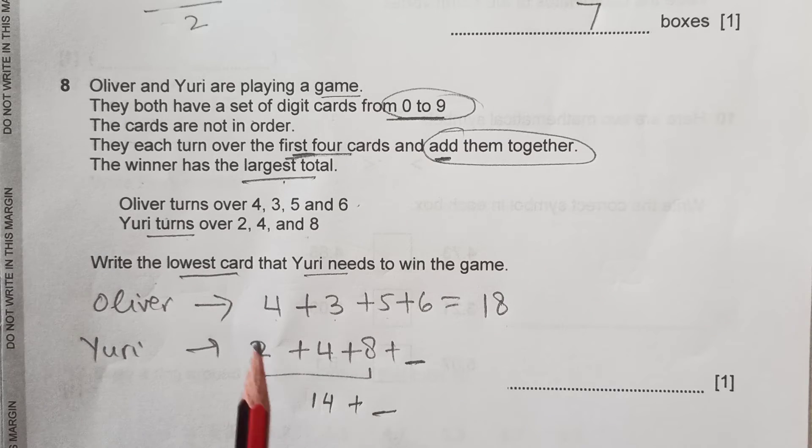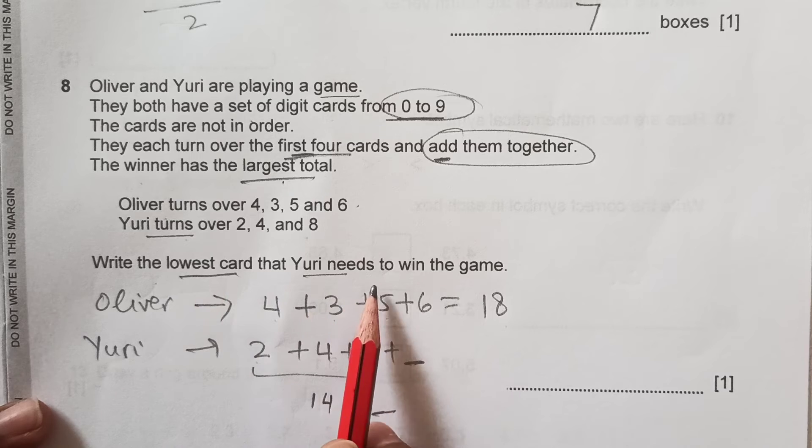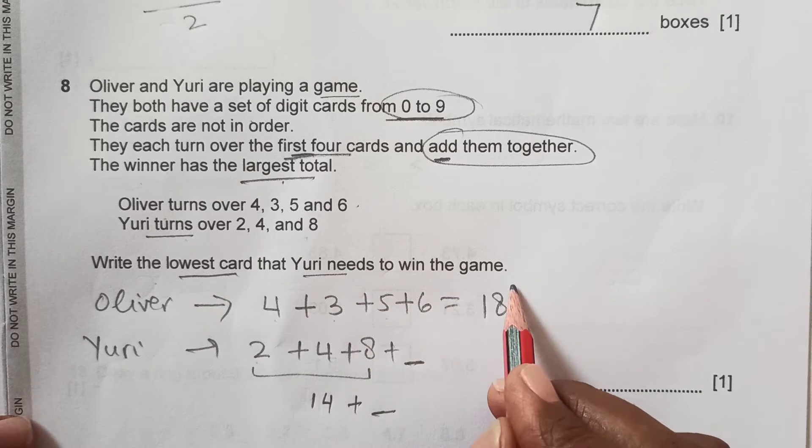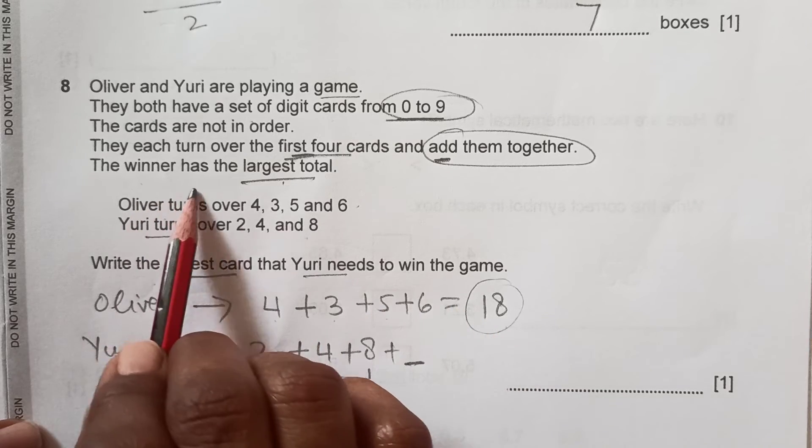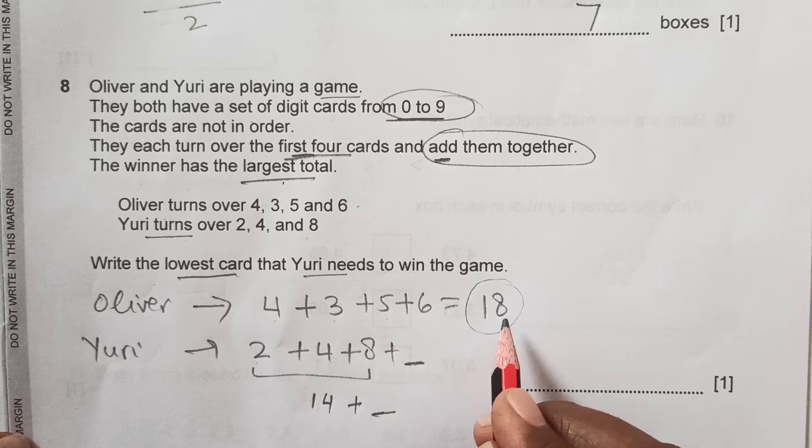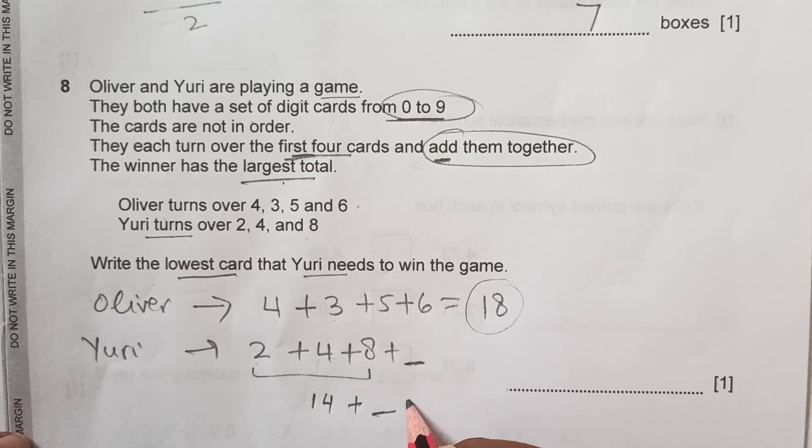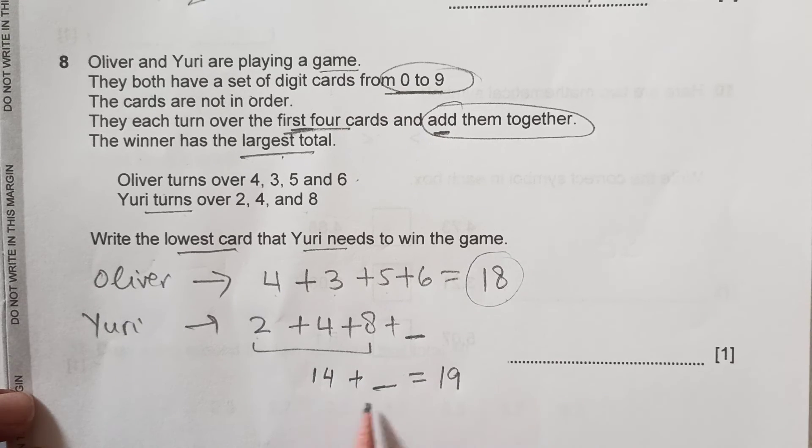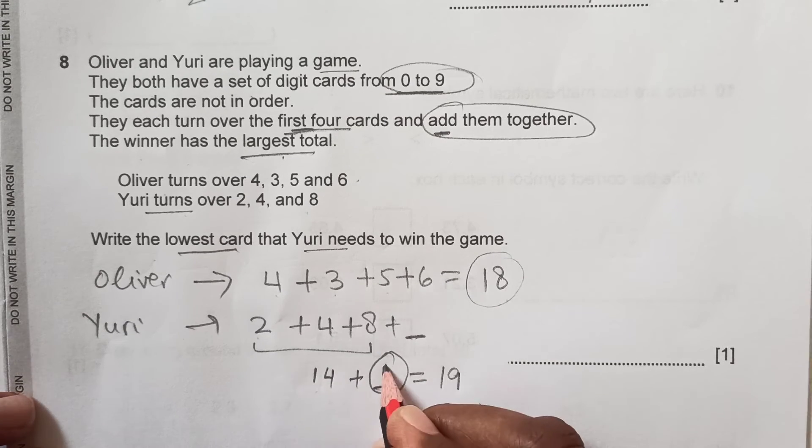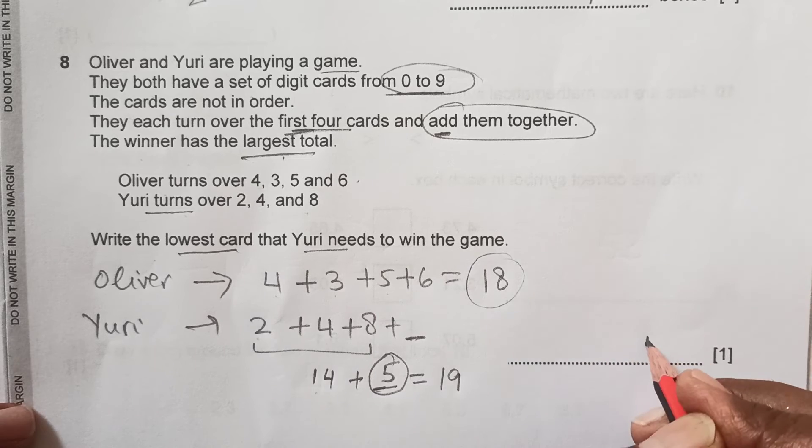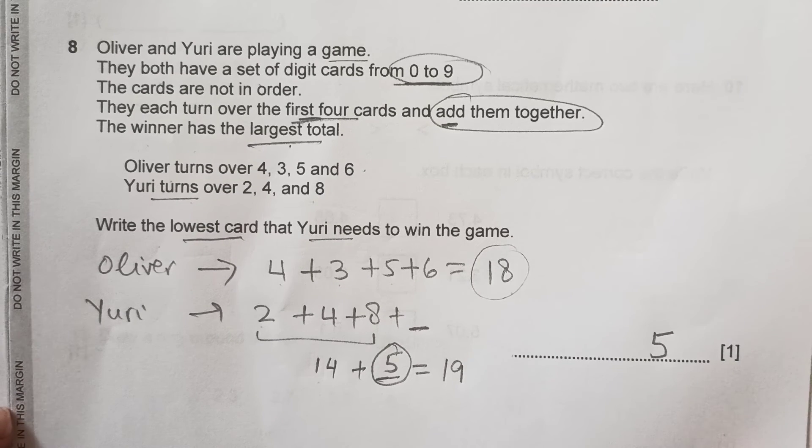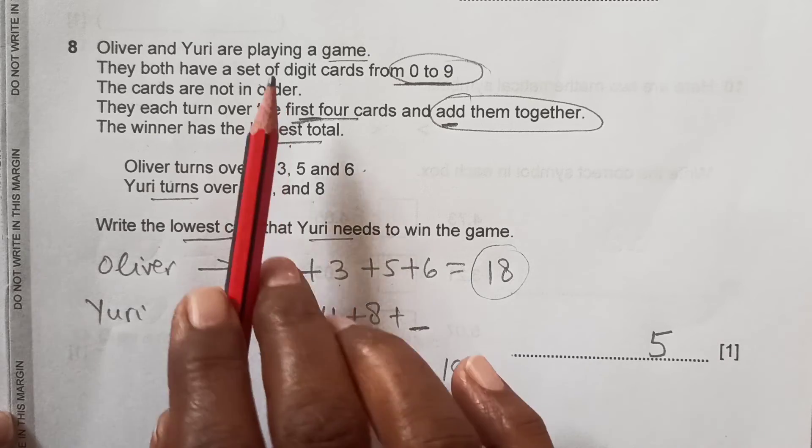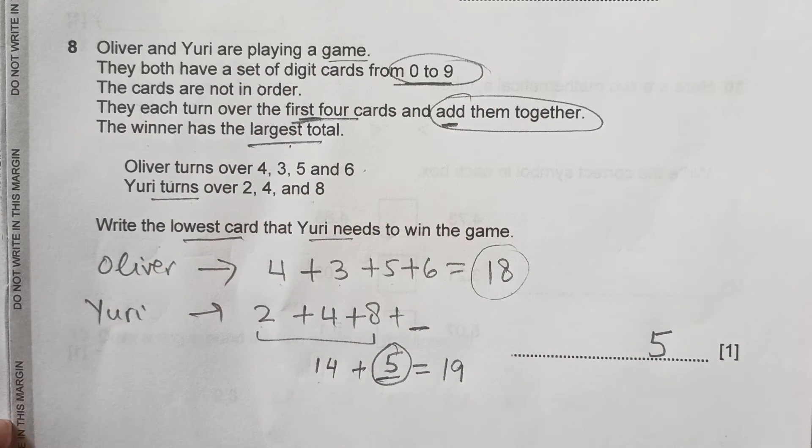What is that? That is our question: Write the lowest card that Yuri needs to win the game. The total for Oliver is 18, so this should be more than 18 because the winner has the largest total. For making this more than 18, it can be 19. So what number should come over here? 14 plus 5, so he can have the smallest number which is 5 that can make the total more than Oliver's total. Just go through this question again because you have to combine this information to reach the conclusion.